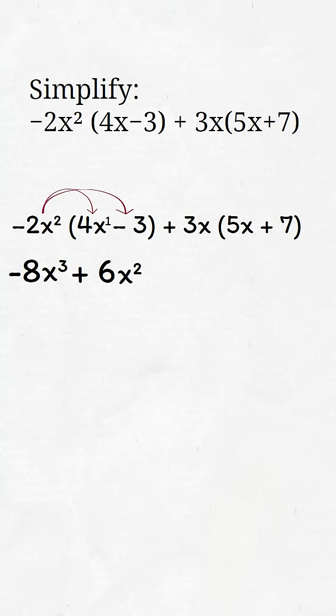Next, we distribute the 3x. 3x times 5x is 15x squared. We multiplied the numbers, then added the exponents of the x.